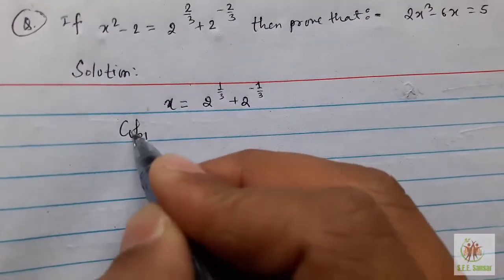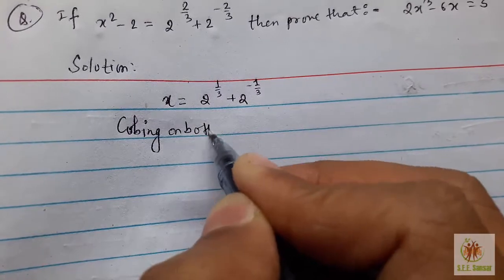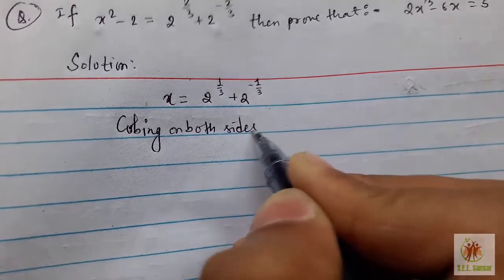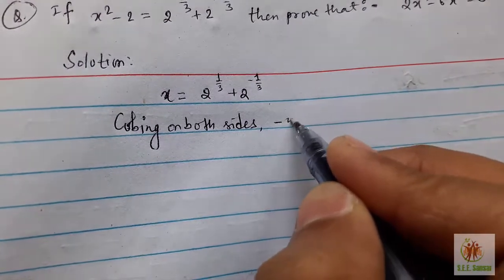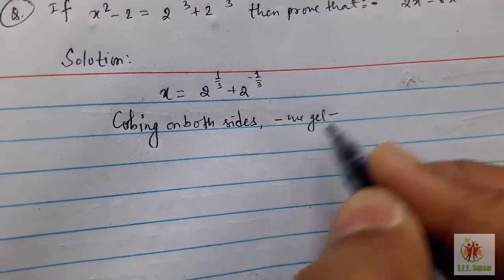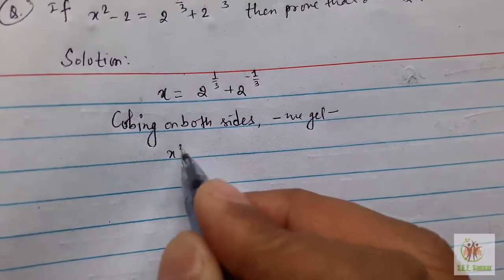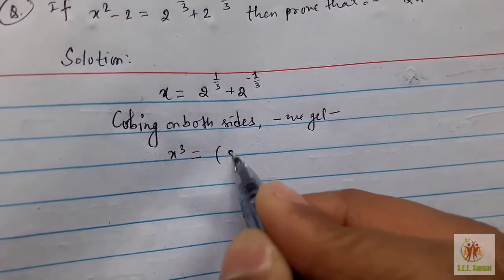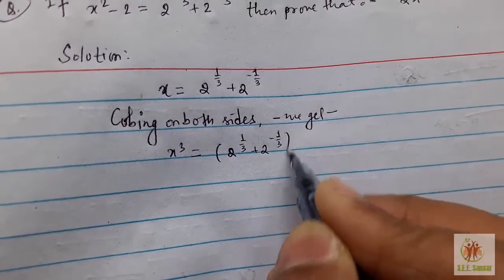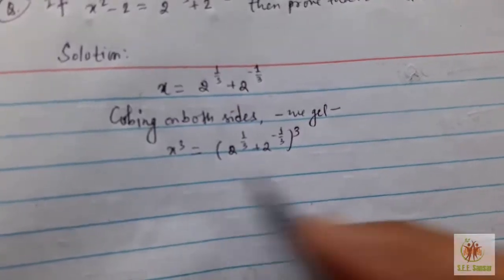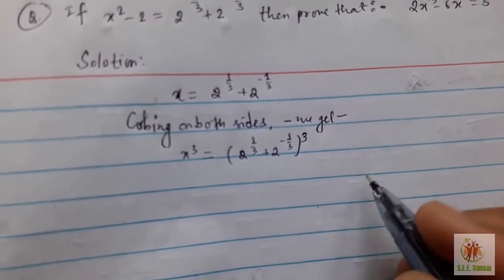Cubing both sides, we get x³ = [2^(1/3) + 2^(-1/3)]³. I don't know why this is getting blurry.